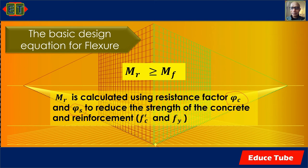The resistance factors φc and φs are used to account for possible variation of dimensions of cross sections and material strength, as well as for possible uncertainties in the strength equations.